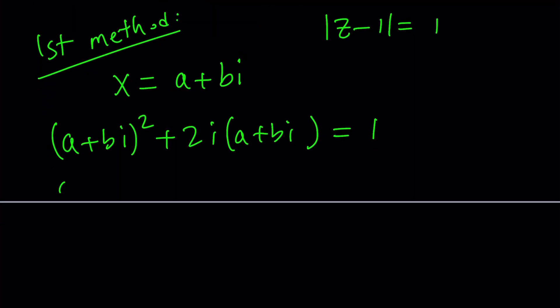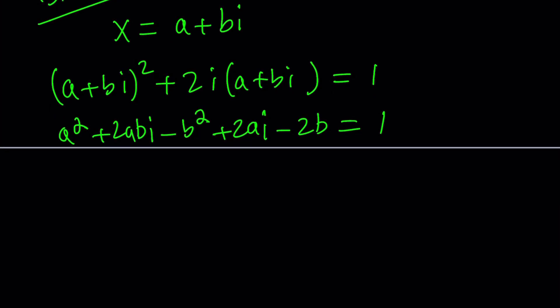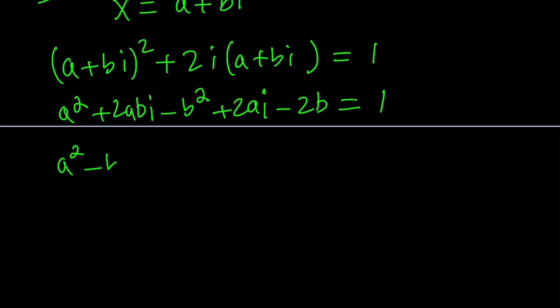If you square this you're going to get a squared plus 2abi plus b squared i squared, which is the same thing as minus b squared plus 2ai, and then plus 2bi squared which is the same thing as minus 2b or not 2b. That equals 1. Now let's go ahead and put the real parts together: a squared minus b squared minus 2b. That's the real part and the imaginary part is basically 2abi, this one and this one. Of course, we're only interested in the coefficients of i: 2ab plus 2a.